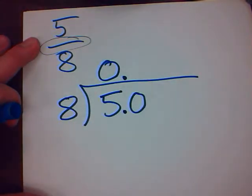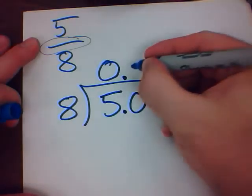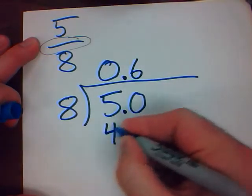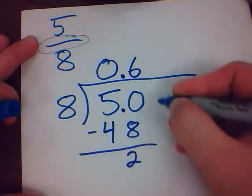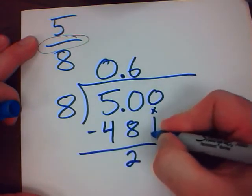How many times does 8 go into 50? Oh, hmm. Use some times tables again. 6 times 8 is 48. Subtract. I get 2. Put in a 0. Bring it down.